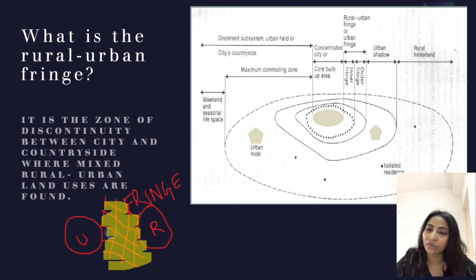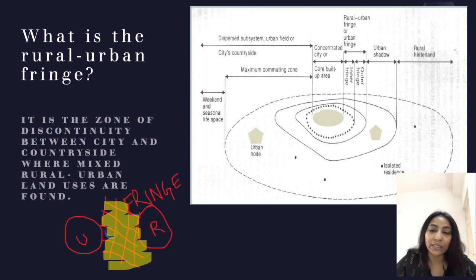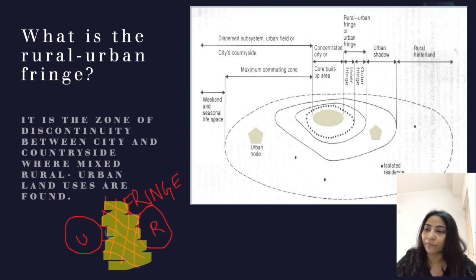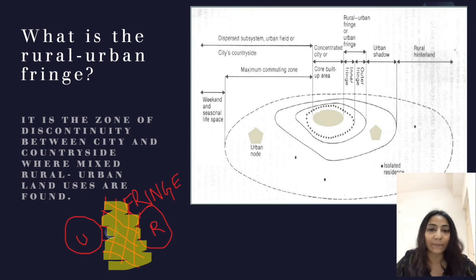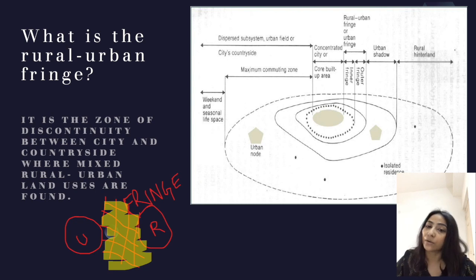For your understanding, I have drawn a simple diagram. U represents the urban area and R represents the rural area, and in between, the yellow portion is the fringe area where both urban and rural land uses are found. In the other diagram, the center portion represents the core built-up area which is the city area, outside is the rural hinterland, and in between we have the rural-urban fringe.